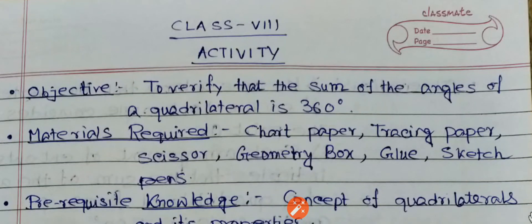Hello and welcome. Today we are going to verify the angle sum property of a quadrilateral which states that the sum of the angles of a quadrilateral is 360 degrees.